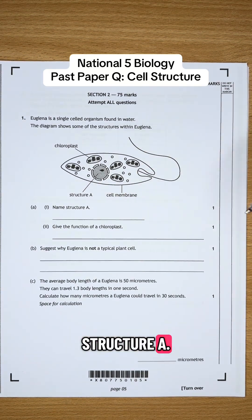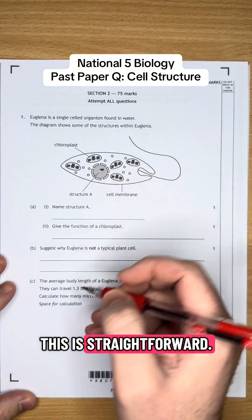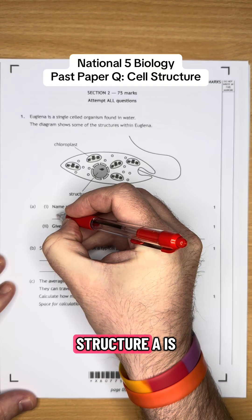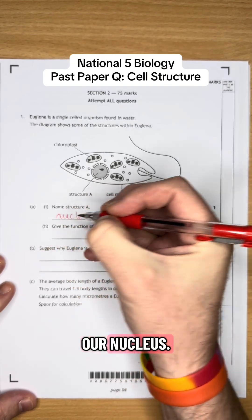Part 1, name structure A. Okay, so hopefully this is straightforward. Structure A is going to be the nucleus. Structure A is our nucleus.